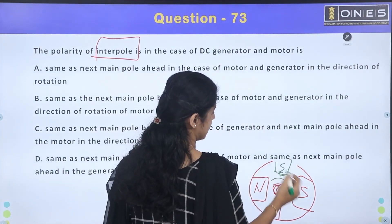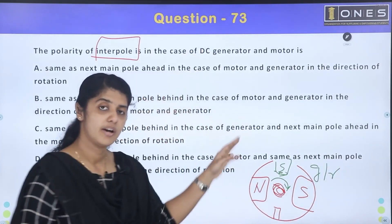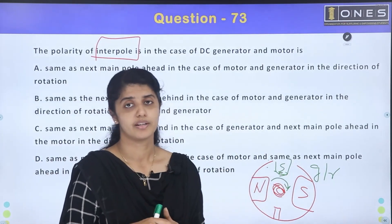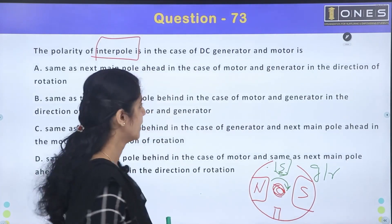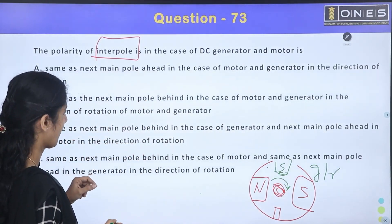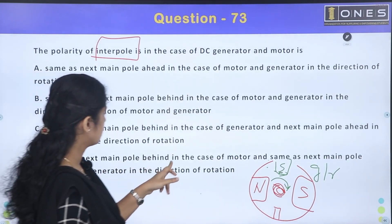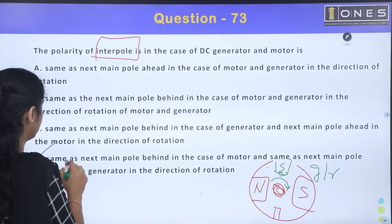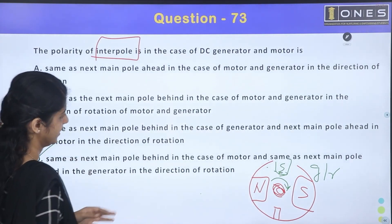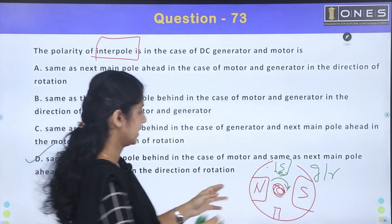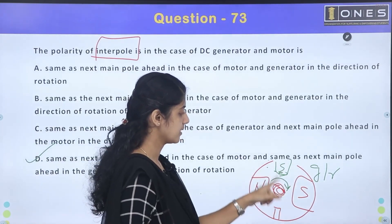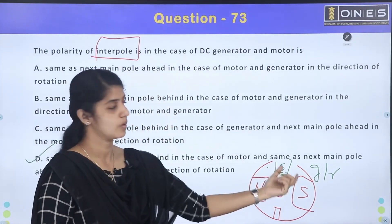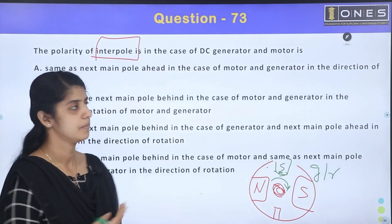In the case of a generator, we add the interpole polarity based on the main pole ahead in the direction of rotation. In the case of a motor, the interpole polarity is the same as the next main pole behind in the direction of rotation. So option D is correct: same as next main pole behind for motor and same as next main pole ahead for generator.